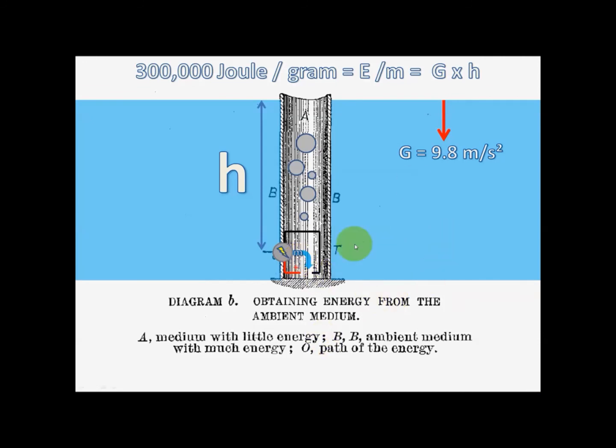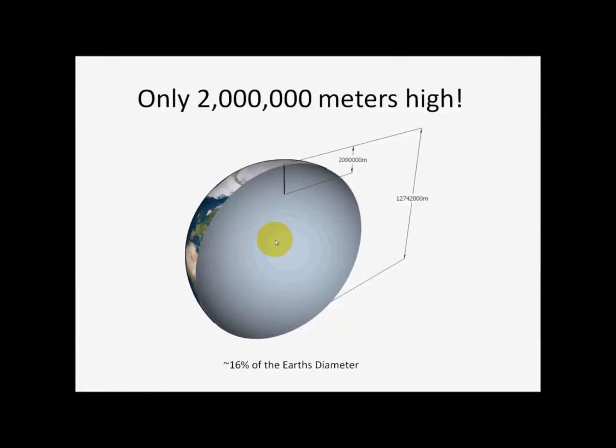I ran some of the numbers based on how much energy you need to dissociate the water and how high the column would need to be, and I got a rough estimate that this Tesla tube that would never fill up would need to be about 2 million meters high. That's roughly 16% of the earth's diameter, but it would fit inside the earth, so that's kind of interesting.